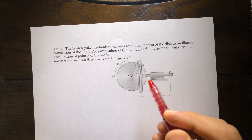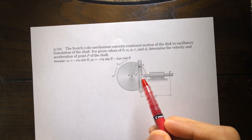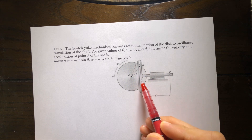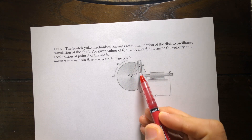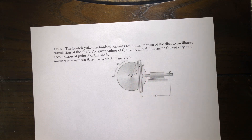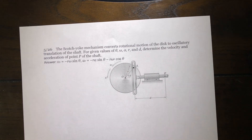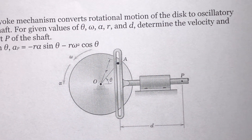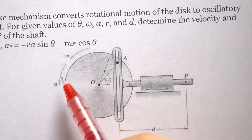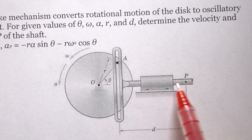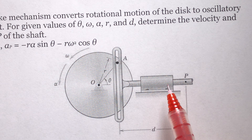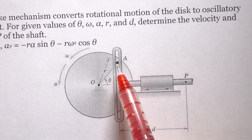This part is connected to the disk through that pin, so the pin can go up and down in this slot. If you look at the mechanism a little bit more carefully — when the disk rotates, this shaft is going to move right and left because of that pin.